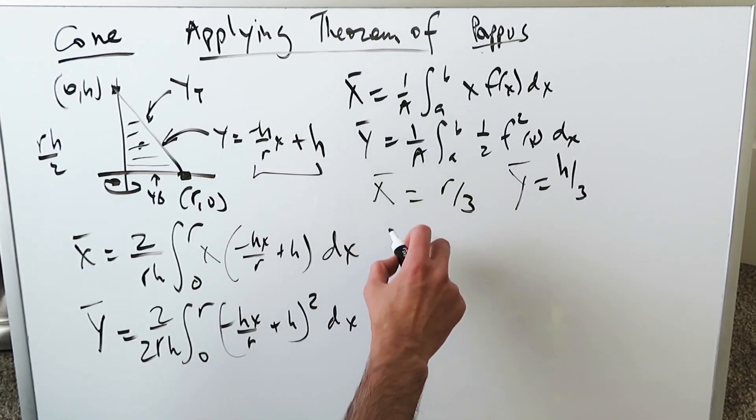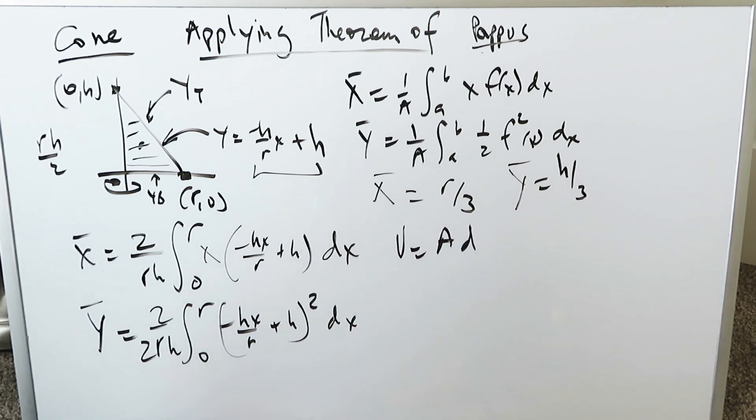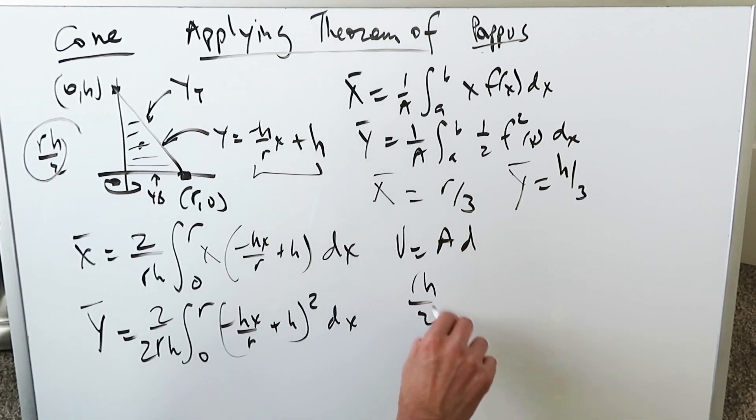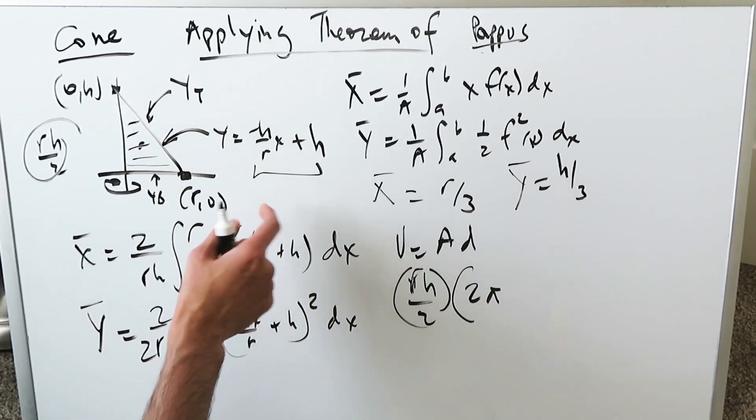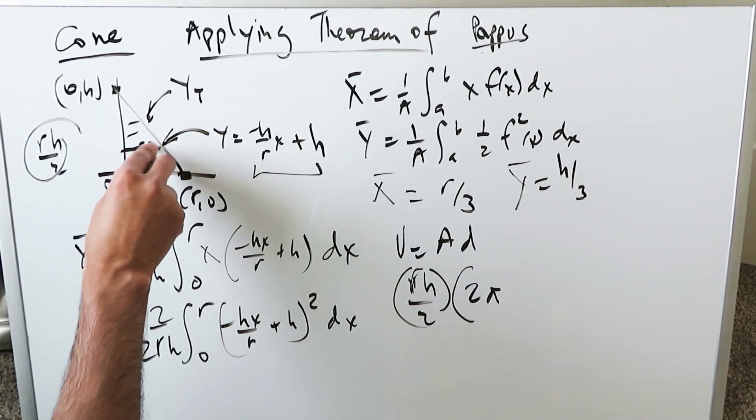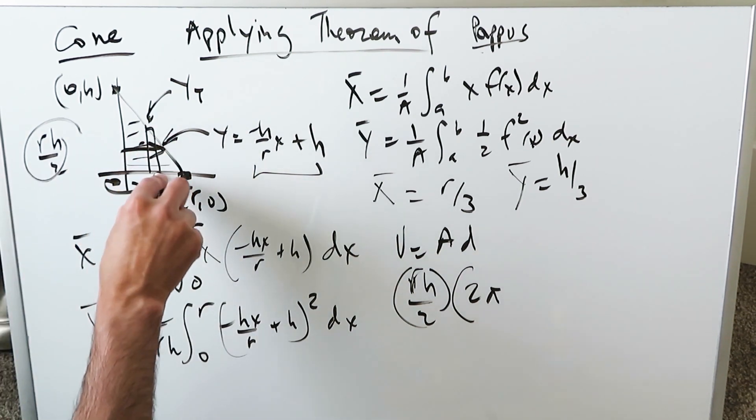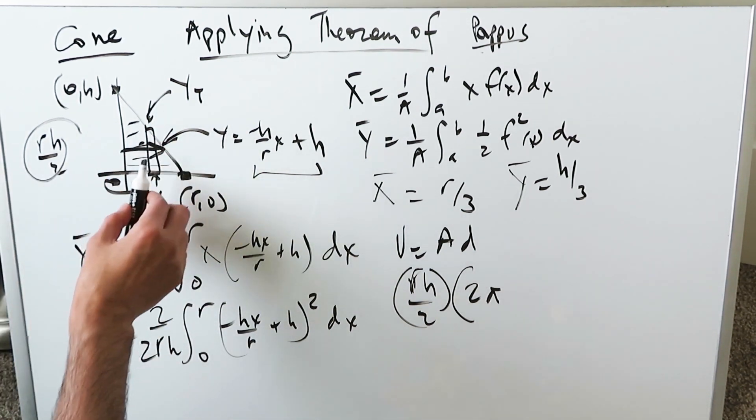Volume is equal to the area times the distance the centroid is traveling with regards to your rotation. What's the area? Again, it's this rh over 2. Now we multiply it by the distance, 2π. Well, a vertical line of rotation. Therefore, I'm looking across in an x dimension. Because I'm looking across in an x dimension, you would have everything here with regards to cylindrical shells and Riemann rectangles.